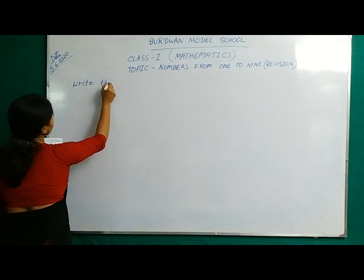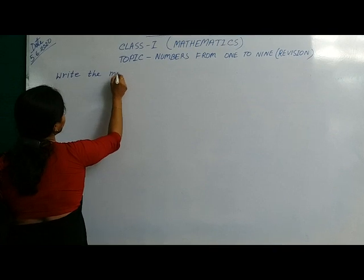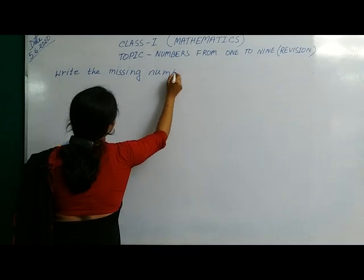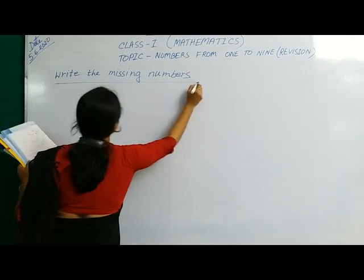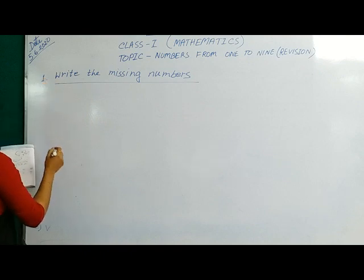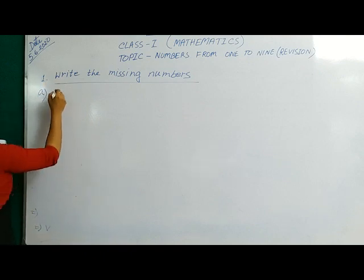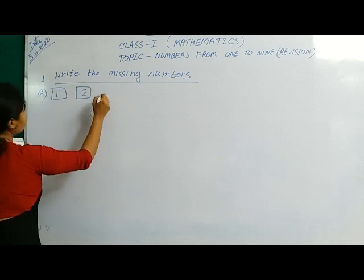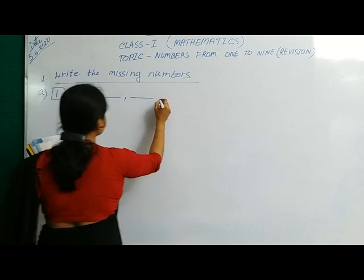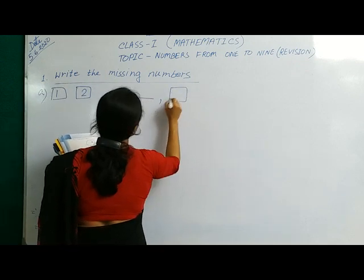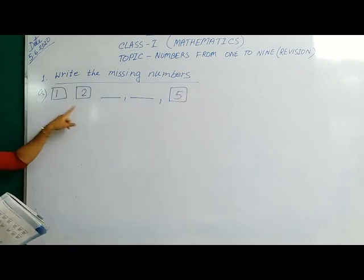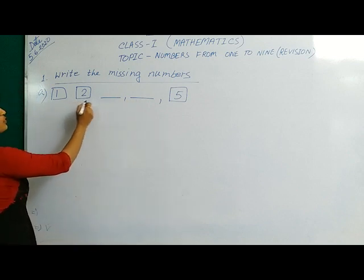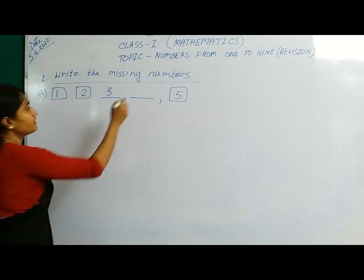Write the missing numbers. 1, 2, then 2, blank. You have to fill up the next number. 1, 2, then 3, after 3, 4.